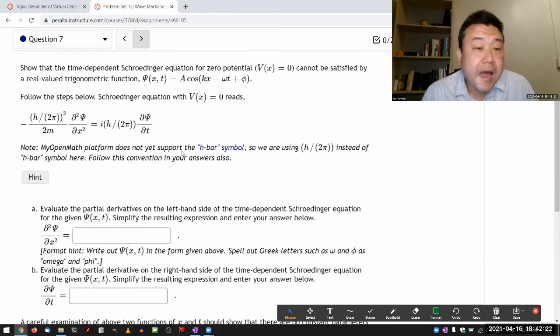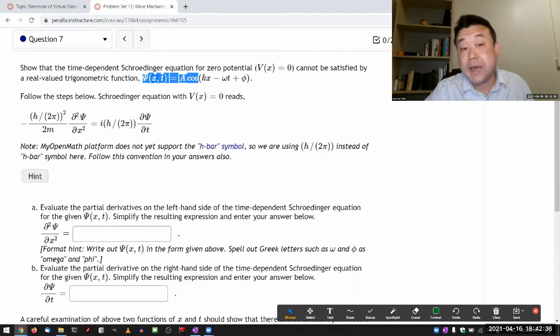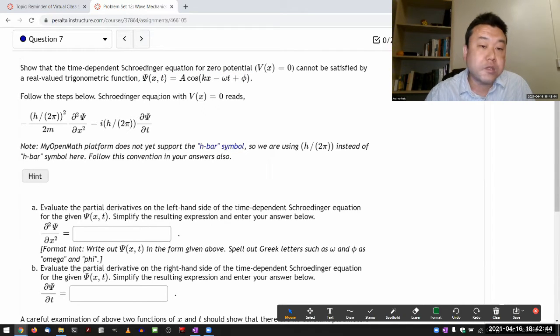So it says, show that the time-dependent Schrödinger equation for zero potential cannot be satisfied by a real-valued trigonometric function. So if we were trying to write down a form of equation for a plane wave using real function, this is how you'd write it. And the point of this question is that you actually need complex-valued functions in order to describe the quantum mechanical wave function in all cases.